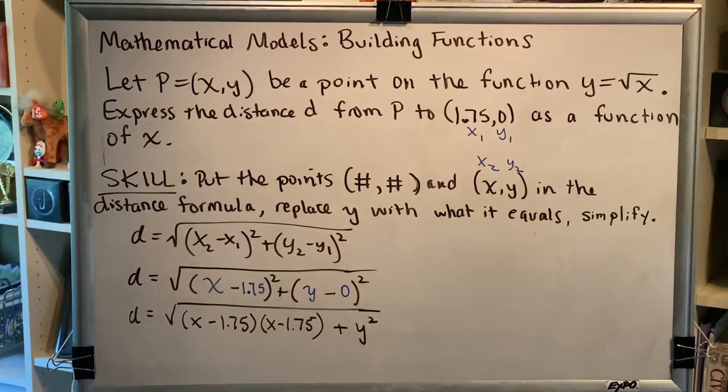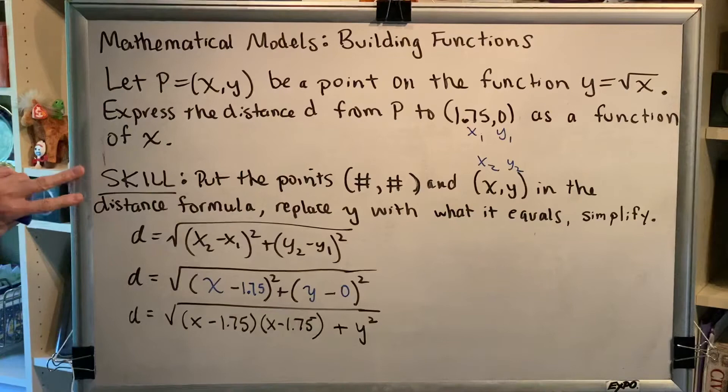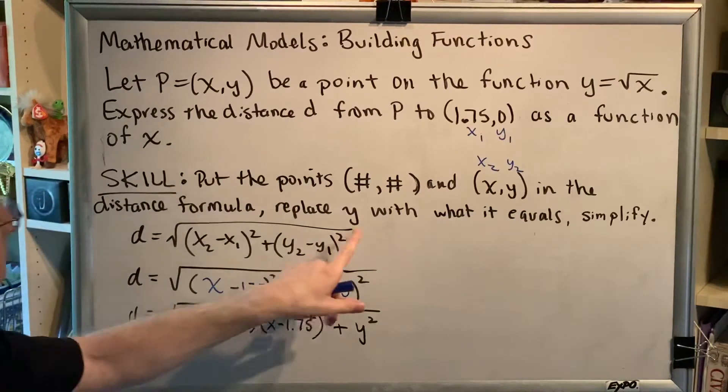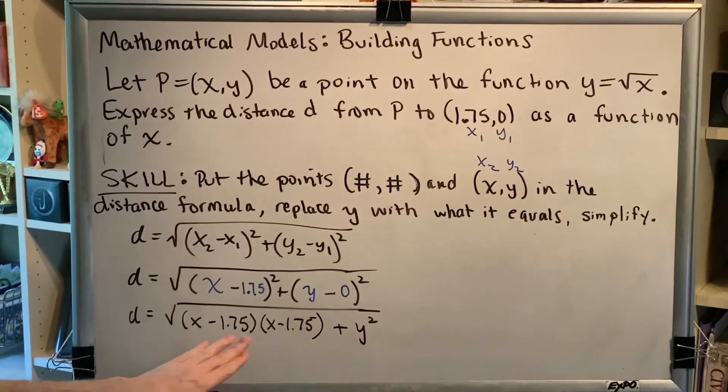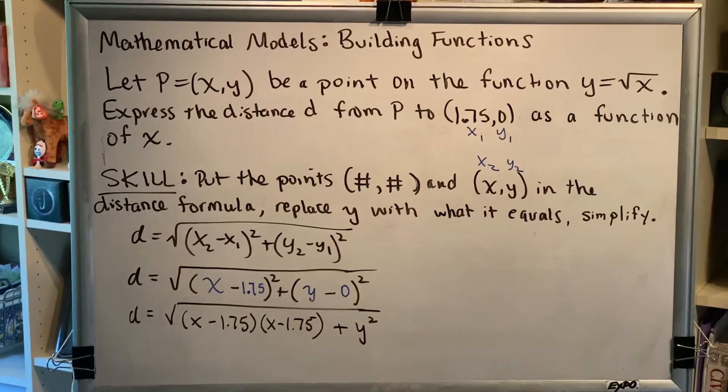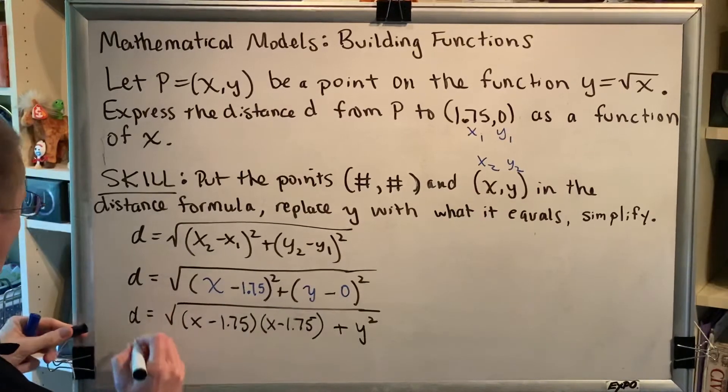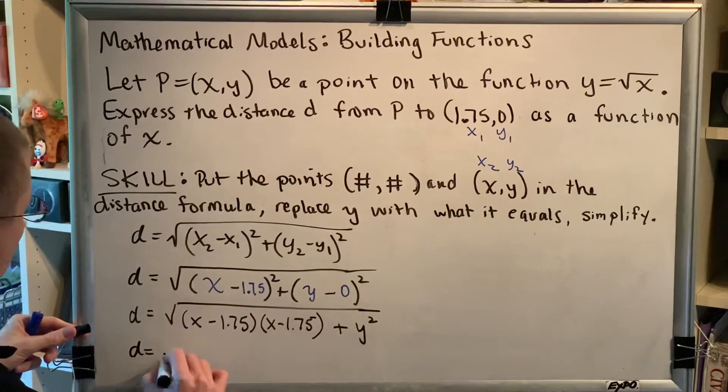Okay, great. So now we're going to do the other two things that were listed here in the skill. We are going to replace y with what it equals and we are going to simplify. That means we're going to do the FOIL in here and then we're going to try and combine some things together. All right, so here we go. We're going to do all of those things in the next line here.